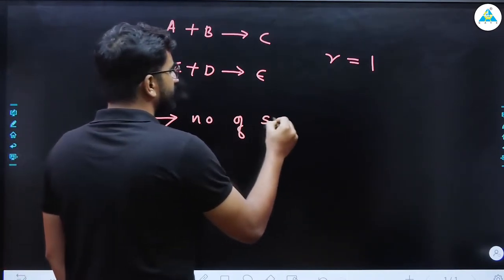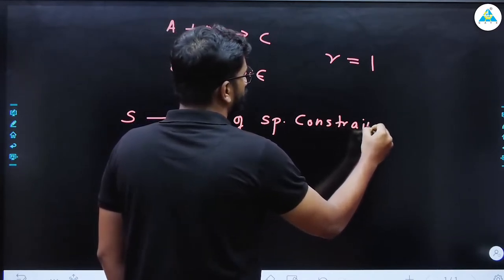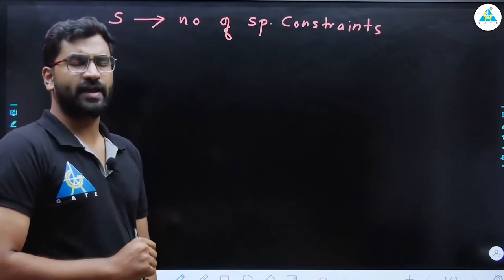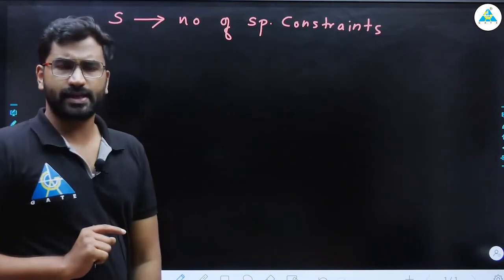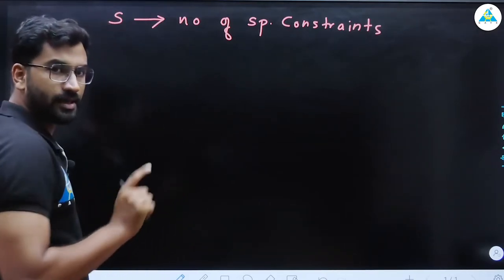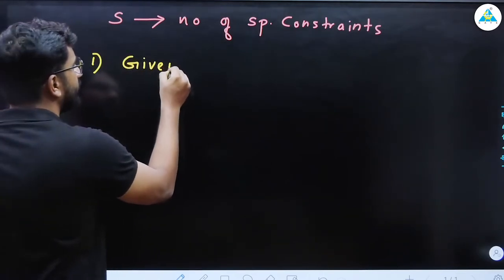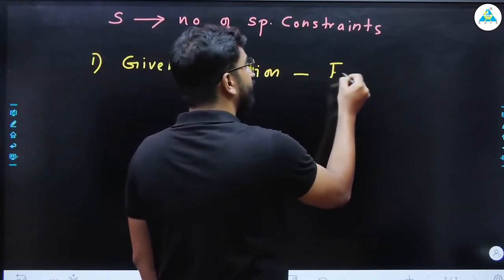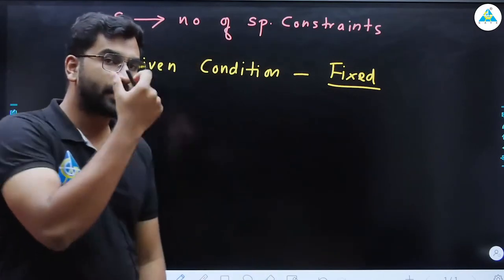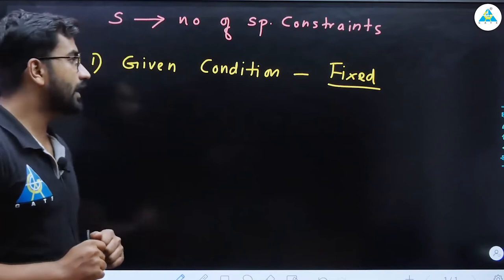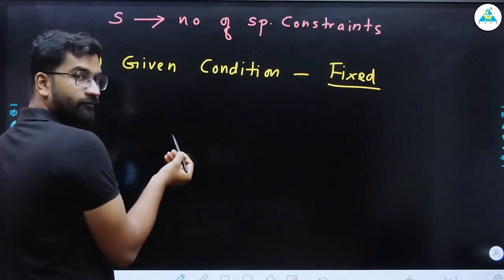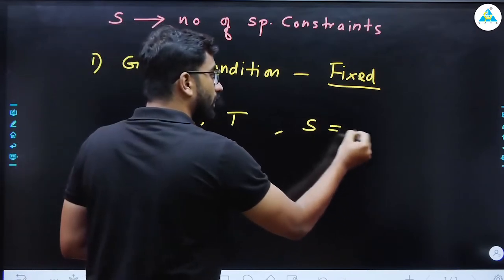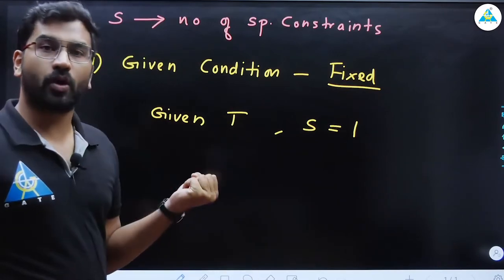S is the number of special constraints or special conditions given in the question. The first case is a given or fixed condition. For example, if the question says 'at a given temperature,' temperature is already fixed. So that counts as one constraint, S = 1, meaning one degree of freedom is already used up by that fixed temperature.